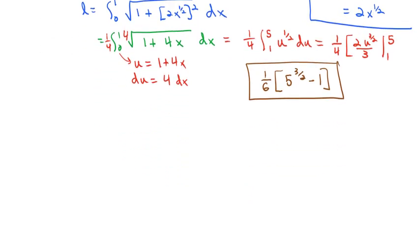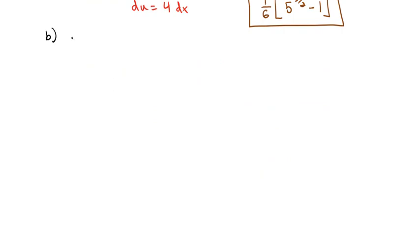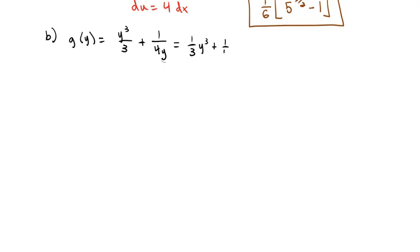We can also do this using y's — much the same idea. Let's say we've got the function g(y) equals y cubed over 3 plus 1 over 4y. We're going to rewrite this as 1/3 y cubed plus 1/4 y to the negative 1, because we know we need the derivative of this function in order to find the arc length. Let's find the arc length between y equals 1 and y equals 3.